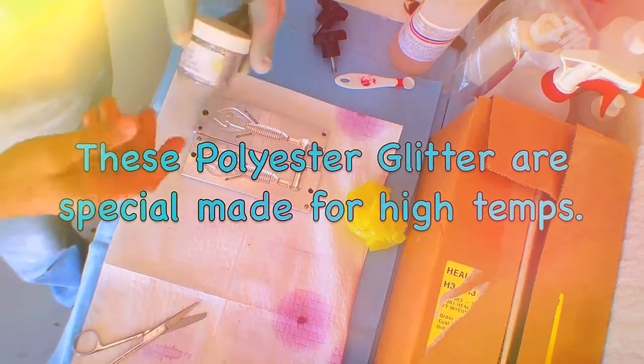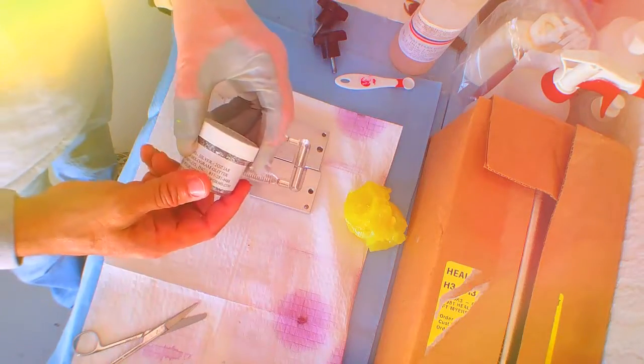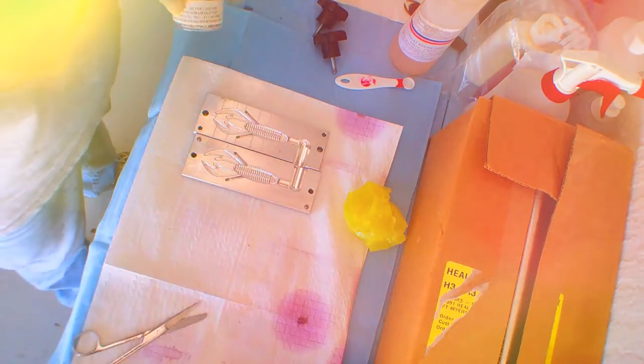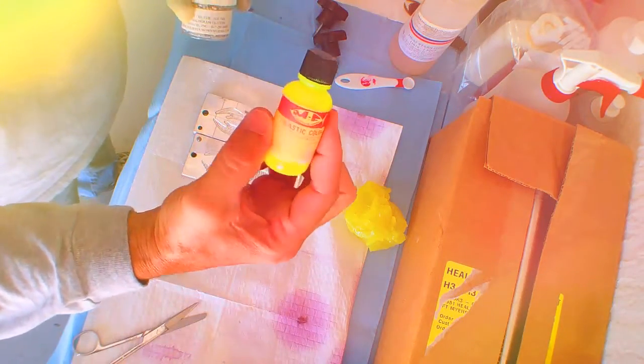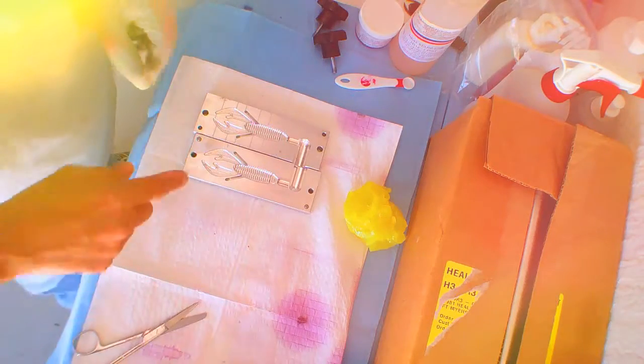Alright guys, I'm heating up the plastic. I added some glitter on it. I also had to add a little bit more color. This is the fluorescent chartreuse. And in a minute I'll be pouring for the crawls.